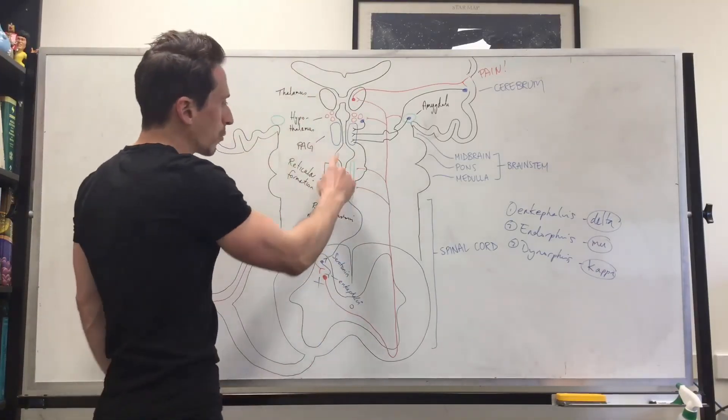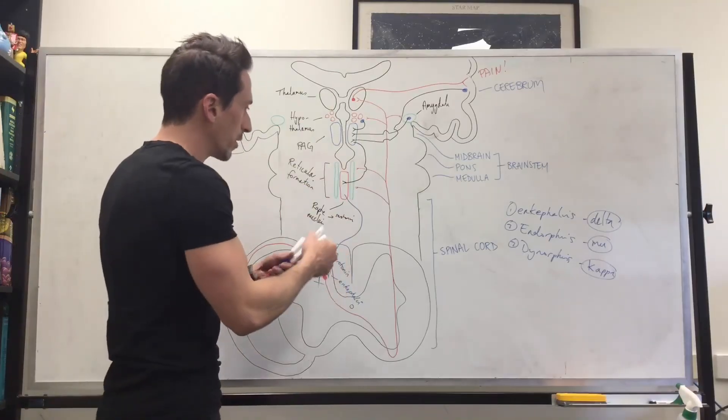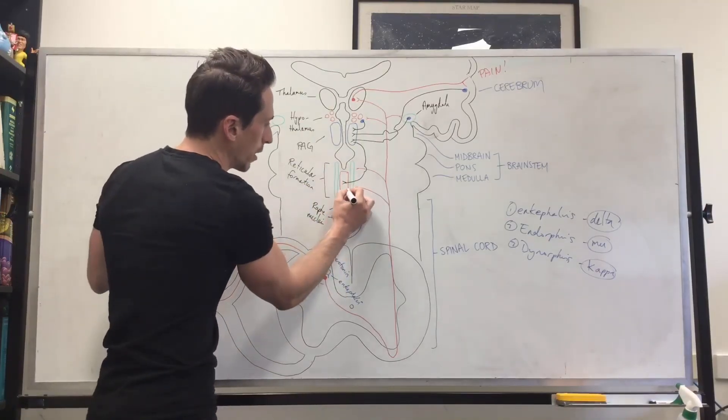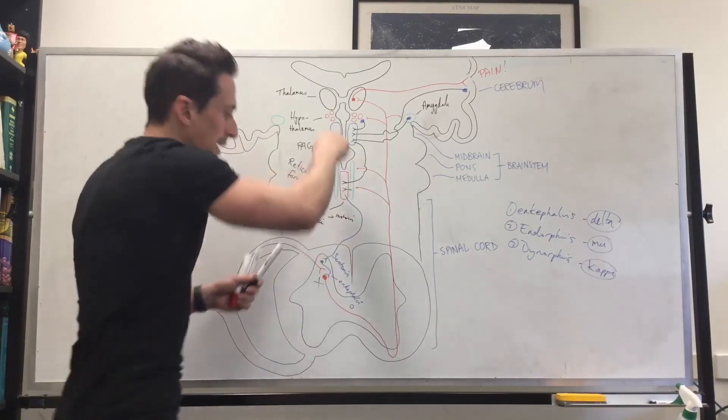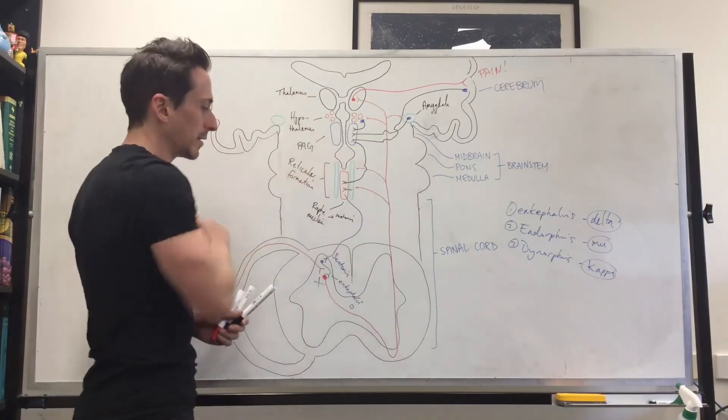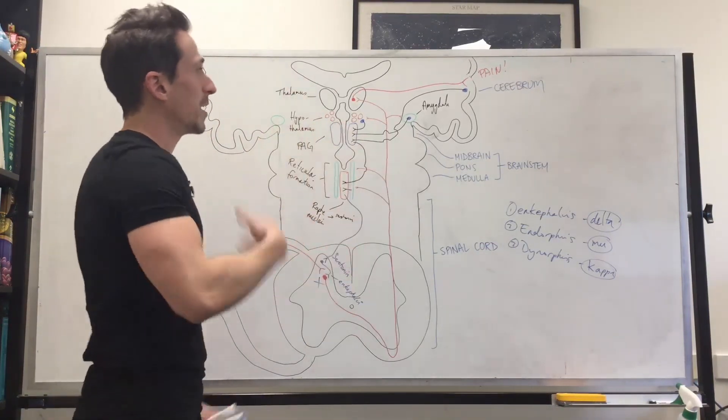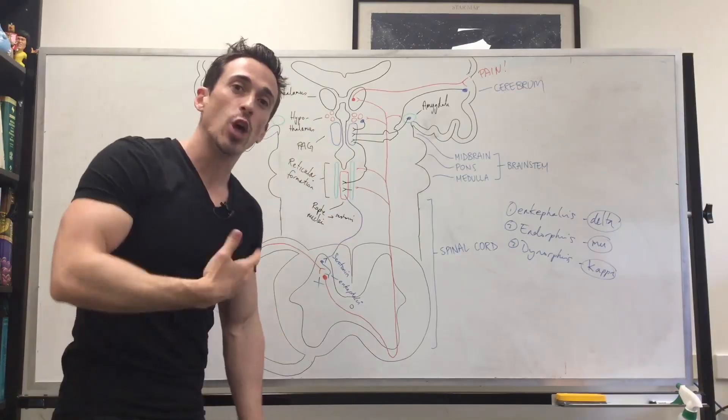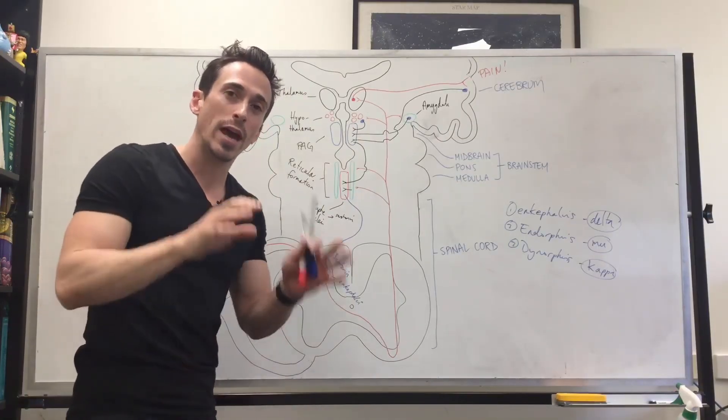Now, you may say, what about the reticular formation? This also sends a signal to the raphé nuclei to send that inhibitory descending signal. So, bit complex, but this is our endogenous opioid pathway, also known as our analgesic pathway.